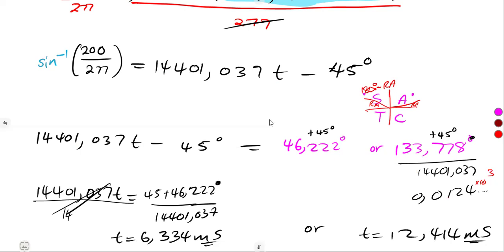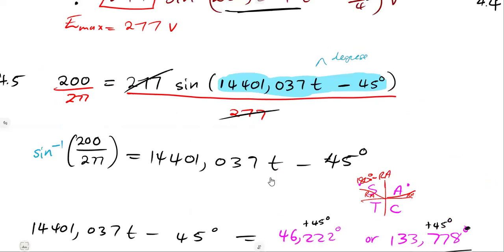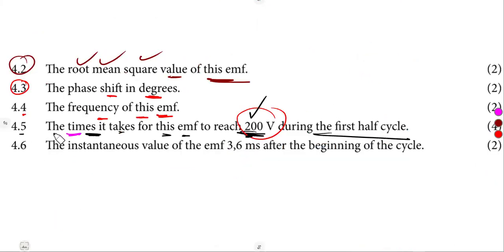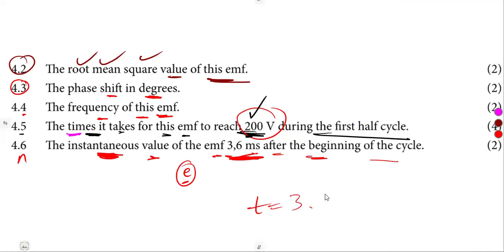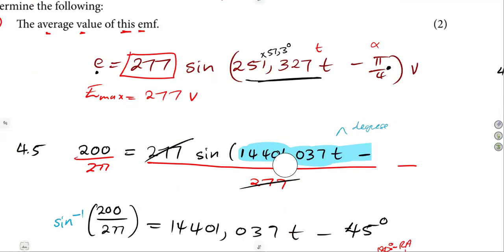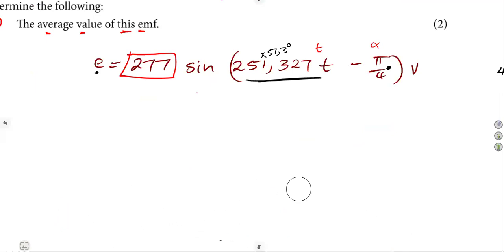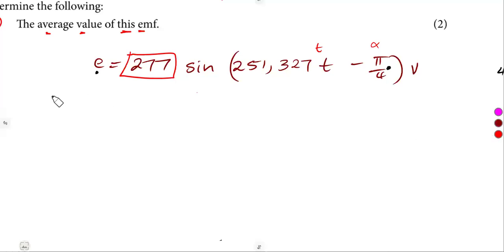This is the idea of how you answer these questions. Make sure you go back to your mathematical presentation — how you were working with sine from trigonometry. For question 4.6, the question is the instantaneous value of E, 3.6 milliseconds after the beginning of the cycle. We are given the time as 3.6 milliseconds — find the instantaneous value, find E.